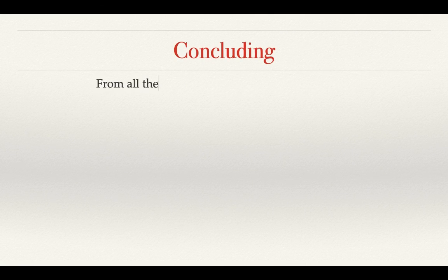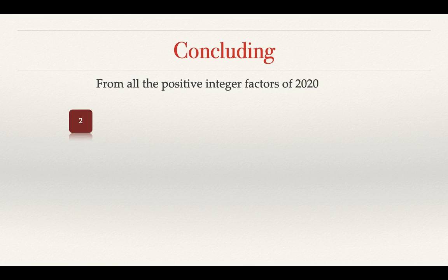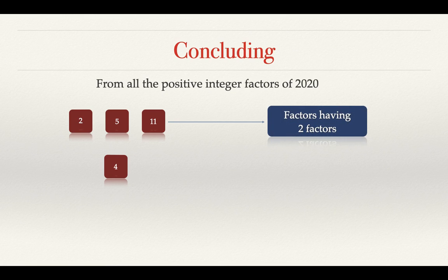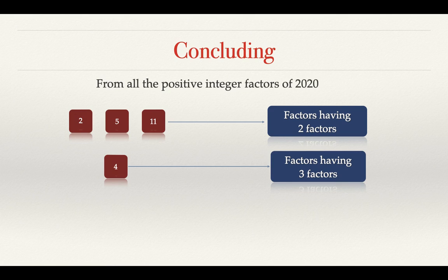Concluding, from all positive integer factors of 2020, we got 2, 5, and 101, and also 4. Now for 2, 5, 101, all these have 2 factors, and 4 has 3 factors. Are we done?